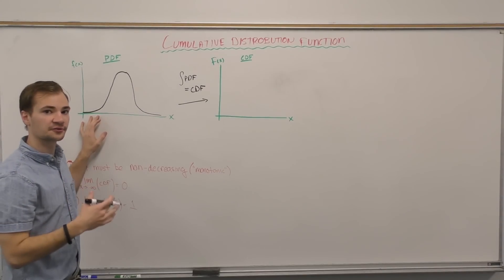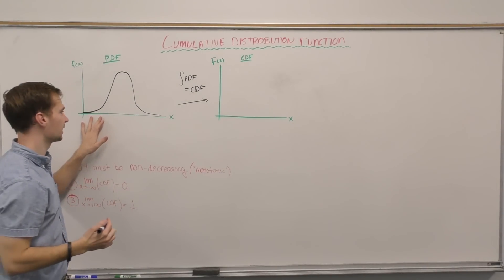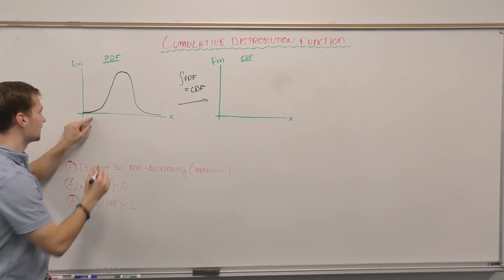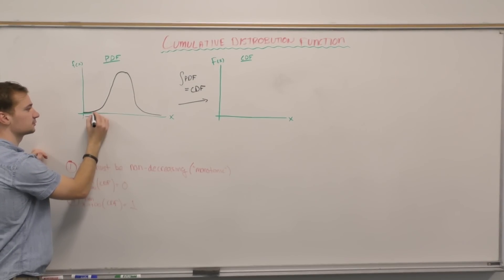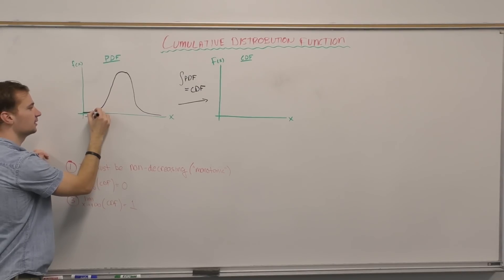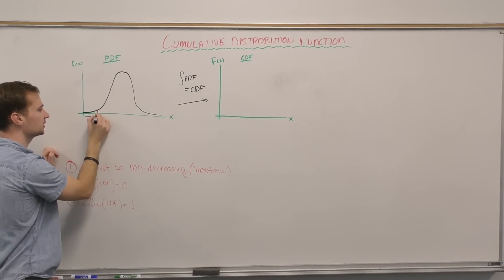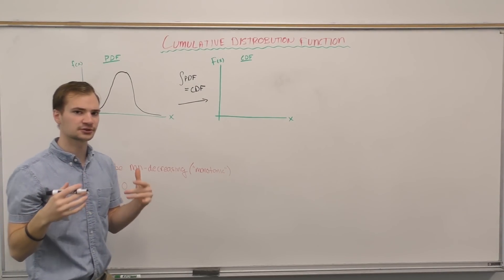Now we start off with a very low accumulated area. The area right here might actually be zero. As we increase, we're adding a little amount of area and a little bit larger amount of area, and a little bit larger, and as we increase, that area gets larger and larger.